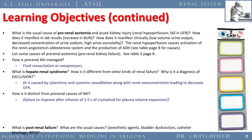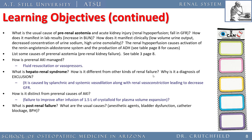Hepatorenal syndrome is a pre-morbid condition caused by splanchnic and systemic vasodilation along with renal vasoconstriction, leading to decreased blood flow. It's usually pre-morbid — the patient typically is going to die if liver failure and kidney failure occur simultaneously. It's distinct from pre-renal causes in that if you give a liter and a half of crystalloid and kidney function, urine output, and creatinine don't improve, that's a sign of hepatorenal syndrome.